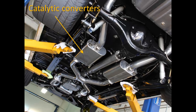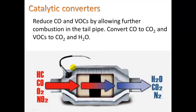A catalytic converter is a device on cars that reduces the primary pollutants responsible for photochemical smog. Every car nowadays has one; they started being used in the 1980s. Hydrocarbons (unburned fuel, also called VOCs) and carbon monoxide (from incomplete combustion) undergo further combustion in the converter, producing CO2 and H2O. Nitrogen oxides are converted into nitrogen gas, which makes up 79% of the air we breathe and is no longer a pollutant.